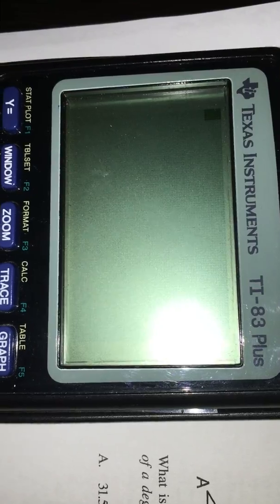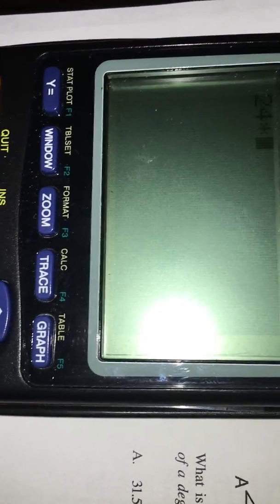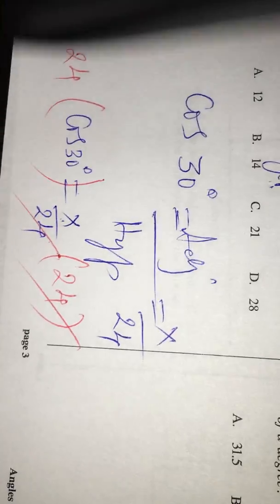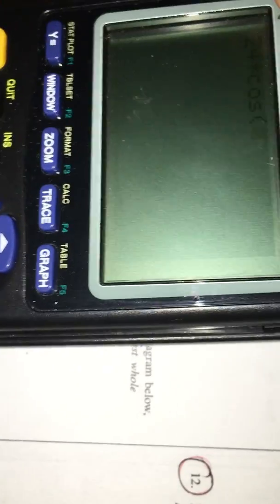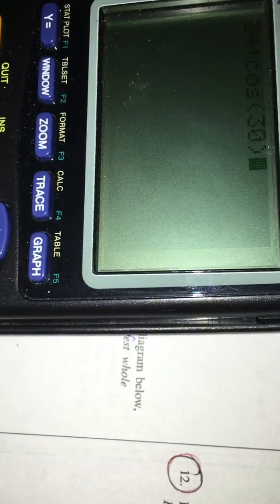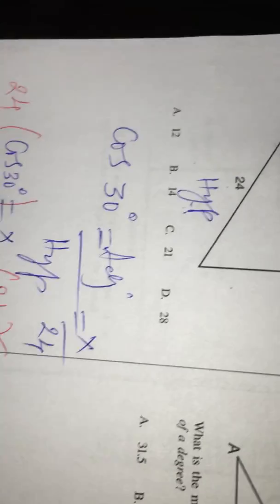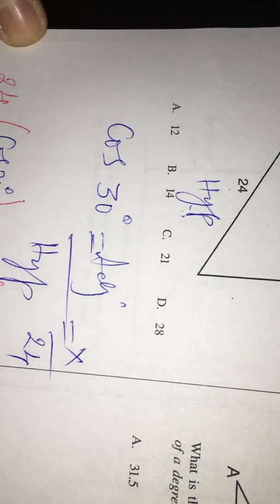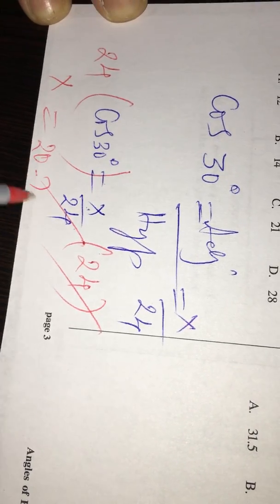Therefore, I clear everything. And then, 24 times cos 30 degrees. So, cos of 30 and close the parenthesis and press enter. Then, you get 20.78. The value we got is X equals 20.78. That represents this side.